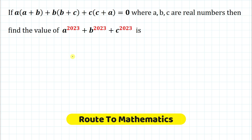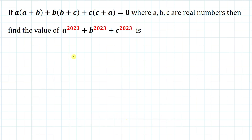Hello everyone, welcome to Root to Mathematics. In this video, we're going to solve this interesting algebraic problem. We are given: a(a+b) + b(b+c) + c(c+a) = 0, where a, b, c are real numbers. Find the value of a²⁰²³ + b²⁰²³ + c²⁰²³.